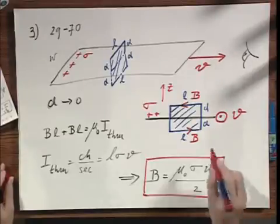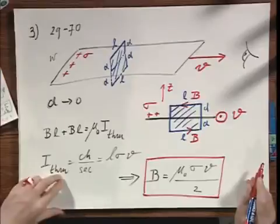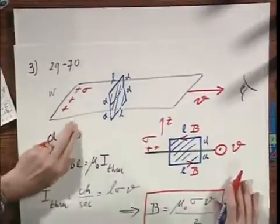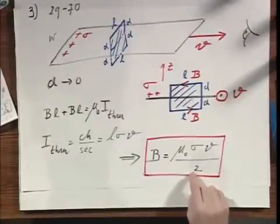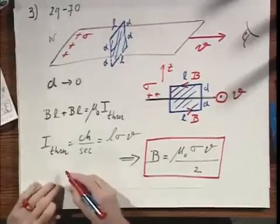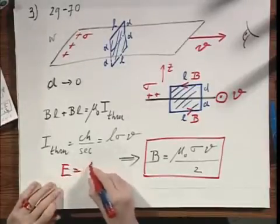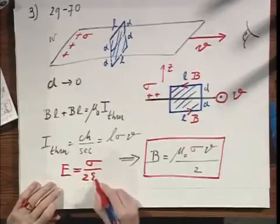This is slightly similar to the case we had earlier, whereby we had a very large plane uniformly charged with positive or negative charge. We also had there that the electric field, provided the sheet is large enough, is independent of z — it's the same above the plane, pointing upwards if it is positive charge, and below the plane pointing downwards, but the magnitudes are the same. For an infinite charge plane, the electric field equals sigma divided by two epsilon zero — that factor of two.